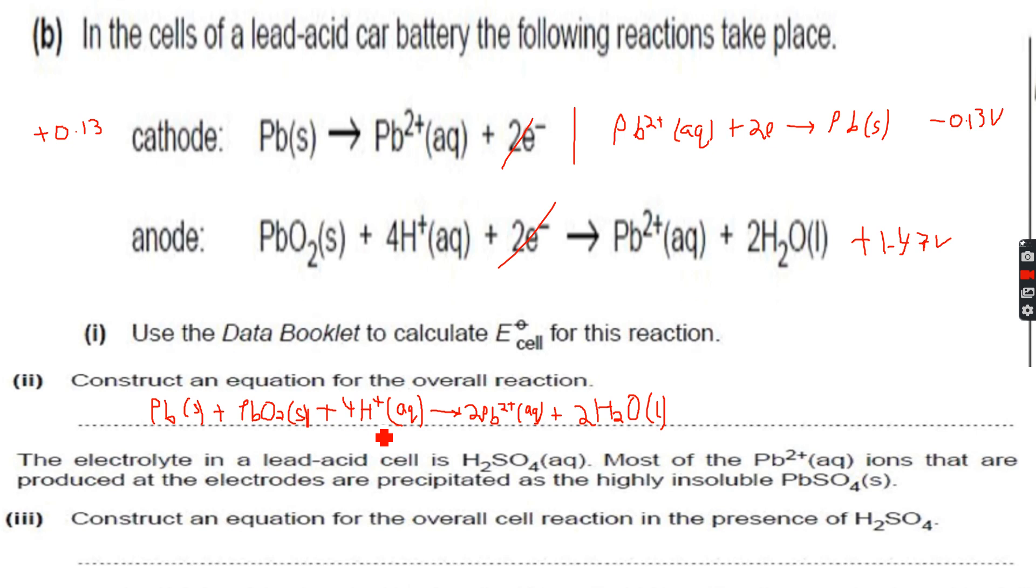So this means that the H plus ions over here, they are because of the H2SO4. Because why do we have H plus? Because there is an acid. So most of the Pb2 plus aqueous ions that are produced at the electrodes are precipitated as the highly insoluble PbSO4 solid.